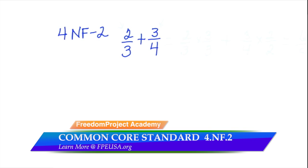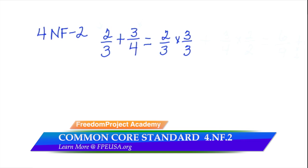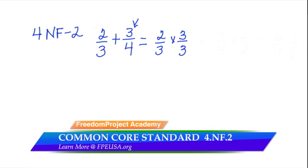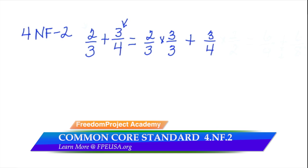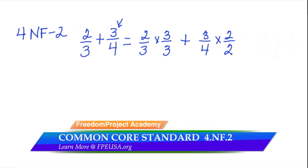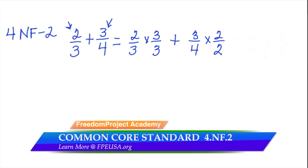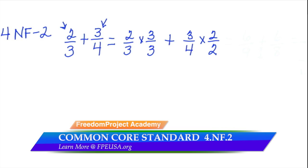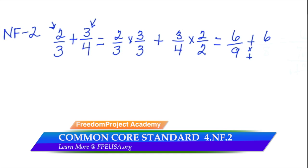However, the common core, this common core standards suggest that we add it by finding the common numerator. This involves a long procedure, but let's demonstrate it here. We would multiply two-thirds times three over three from the three, the three that is the numerator in three-fourths, and the three-fourths by the numerator, two over two, which the two is gotten from the two-thirds. We'll show where these were gotten with our arrows, and that leaves us with six-ninths plus six-eighths.